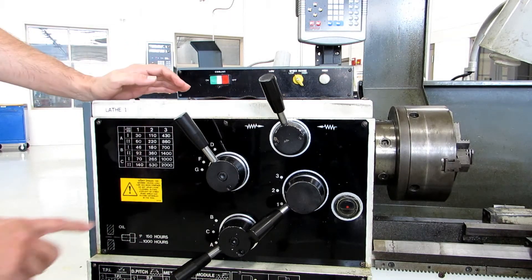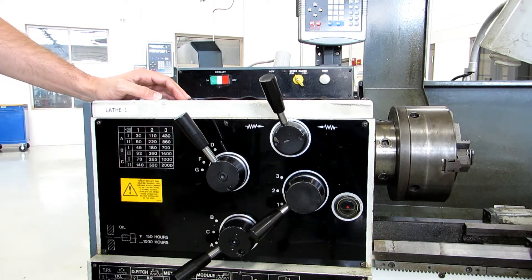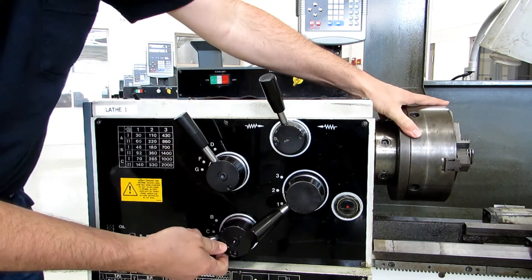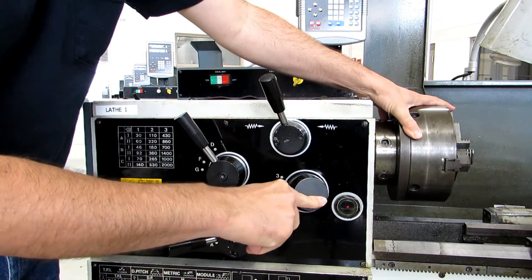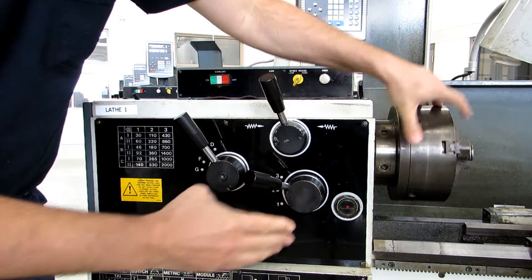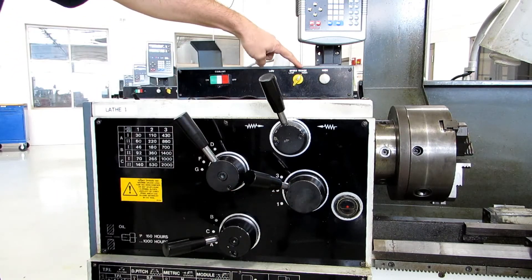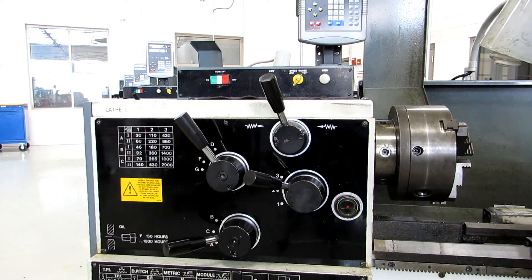Likewise, if we wanted to be at 2000 RPM, we would need to be at C3 and high speed. So we'll switch that to high right now. We'll switch this to C. And again, you have to pull this handle out. That's the only one on the machine that's like that. And then you flip that to 3. So we're at C3 and high, which is Roman numeral 2. And we should be at 2000 RPM. This will be a little loud.